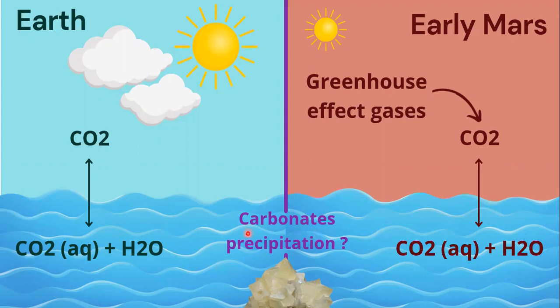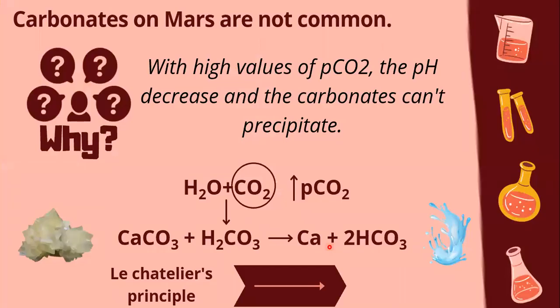Now, if we think about early Mars, there was water on the surface and greenhouse effect gases in the atmosphere such as CO2, then carbonates will precipitate too. However, carbonates on Mars are not common.